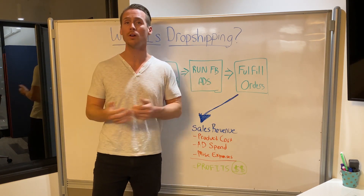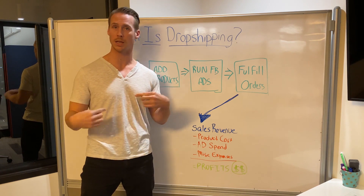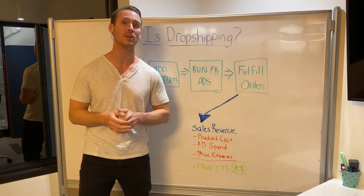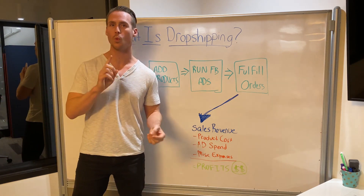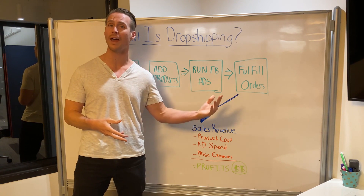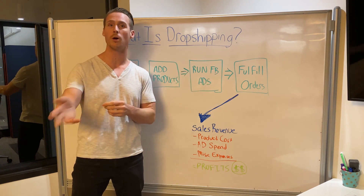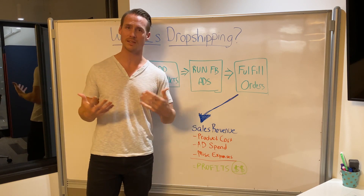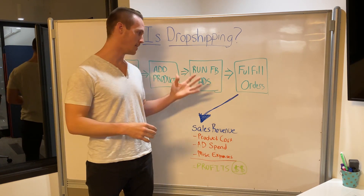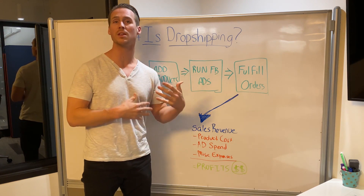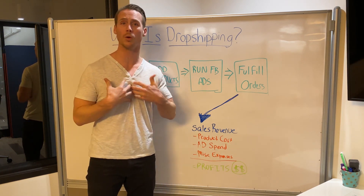Once you start seeing sales come in, it's time to fulfill those orders. You can go back to the seller on AliExpress that listed the product and purchase directly through them, or use apps that plug into your store to one-click fulfill these orders, purchasing through the app to the seller, who then ships directly to your customer. I also recommend developing a direct relationship with one of the suppliers you find.